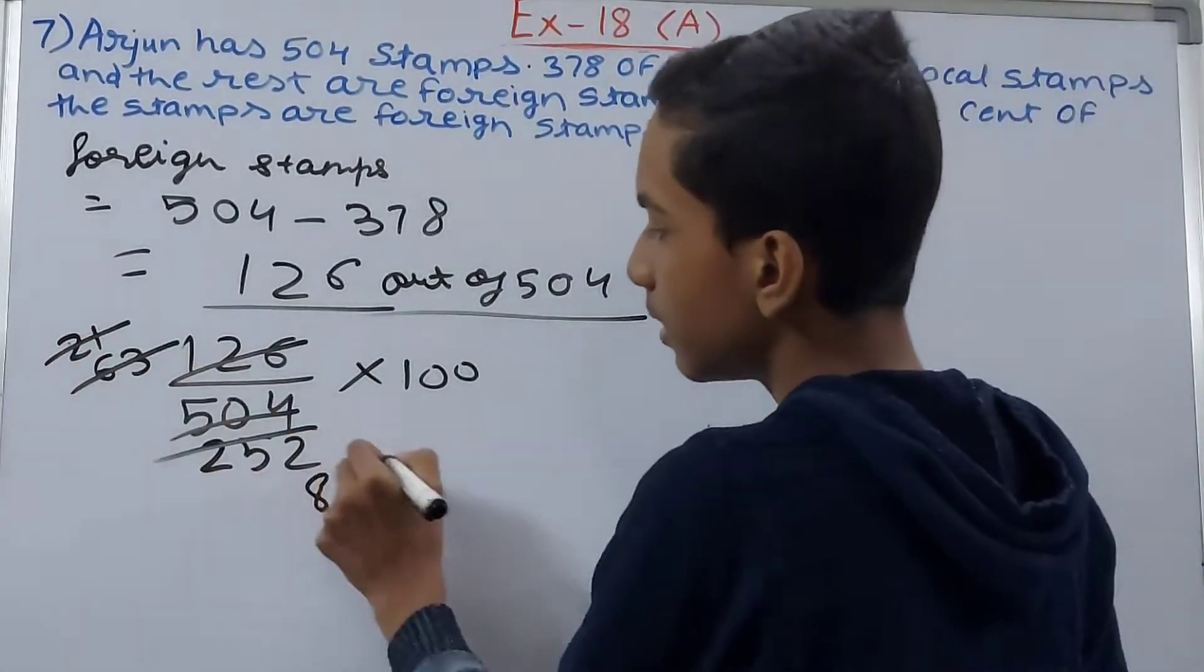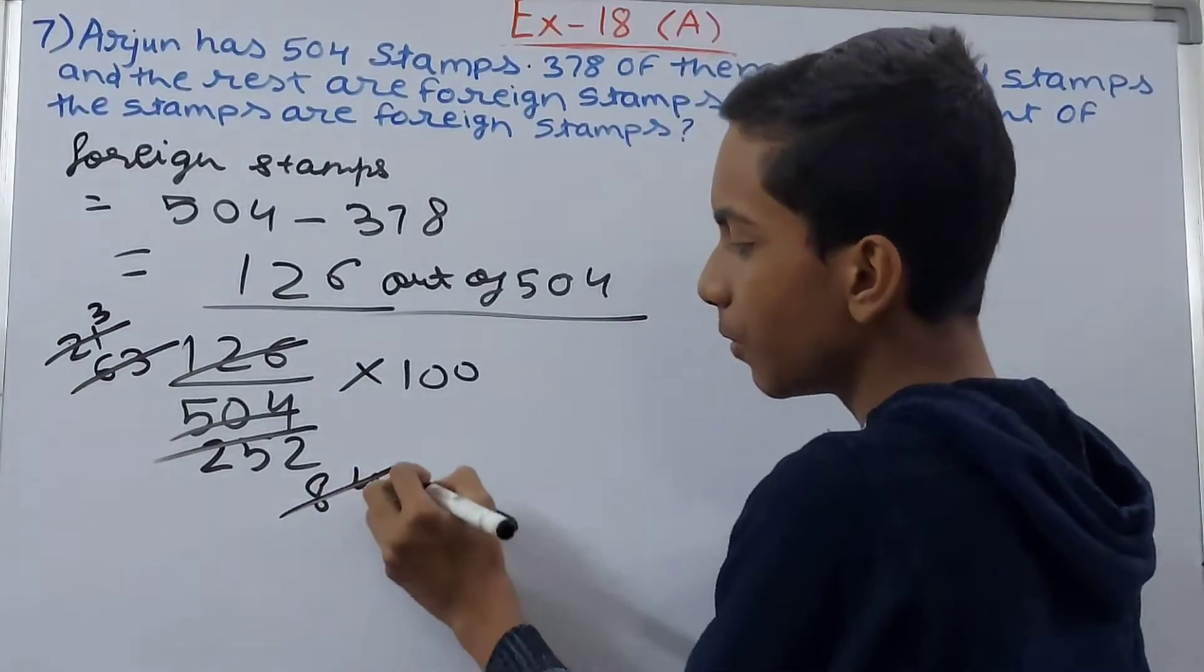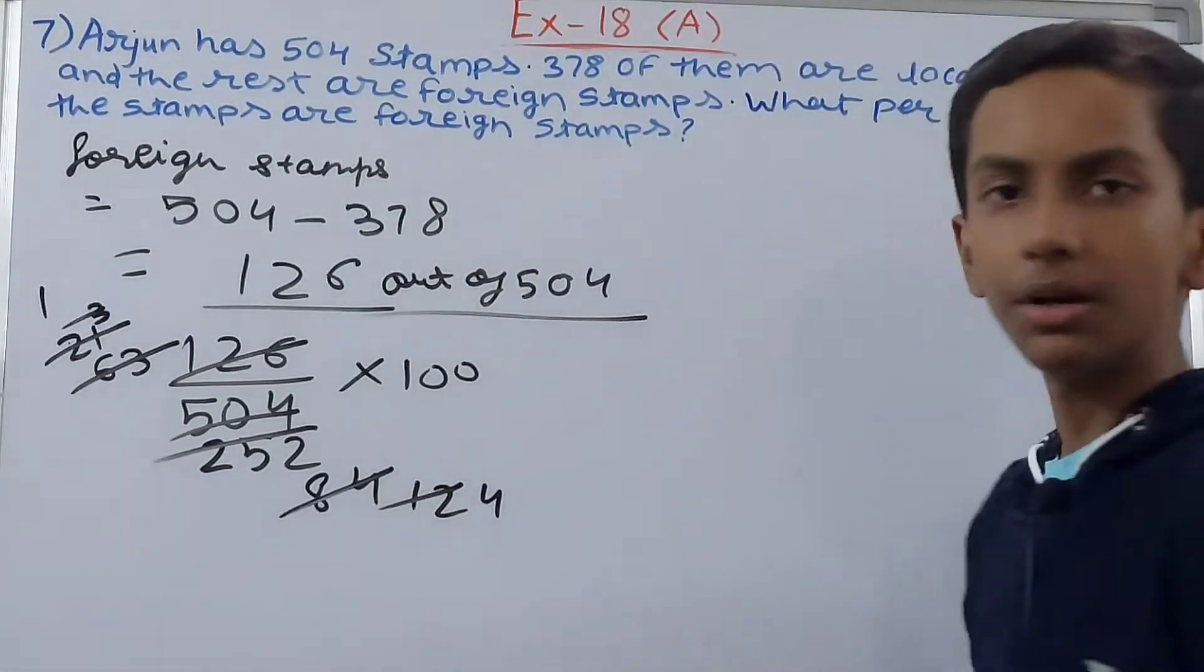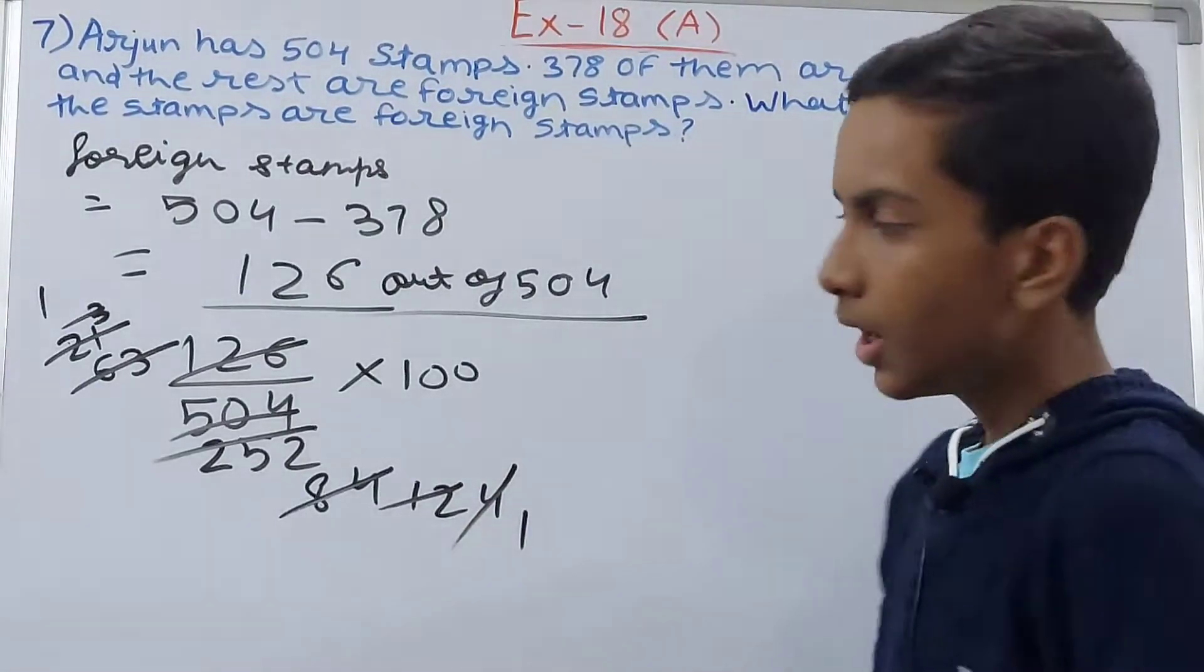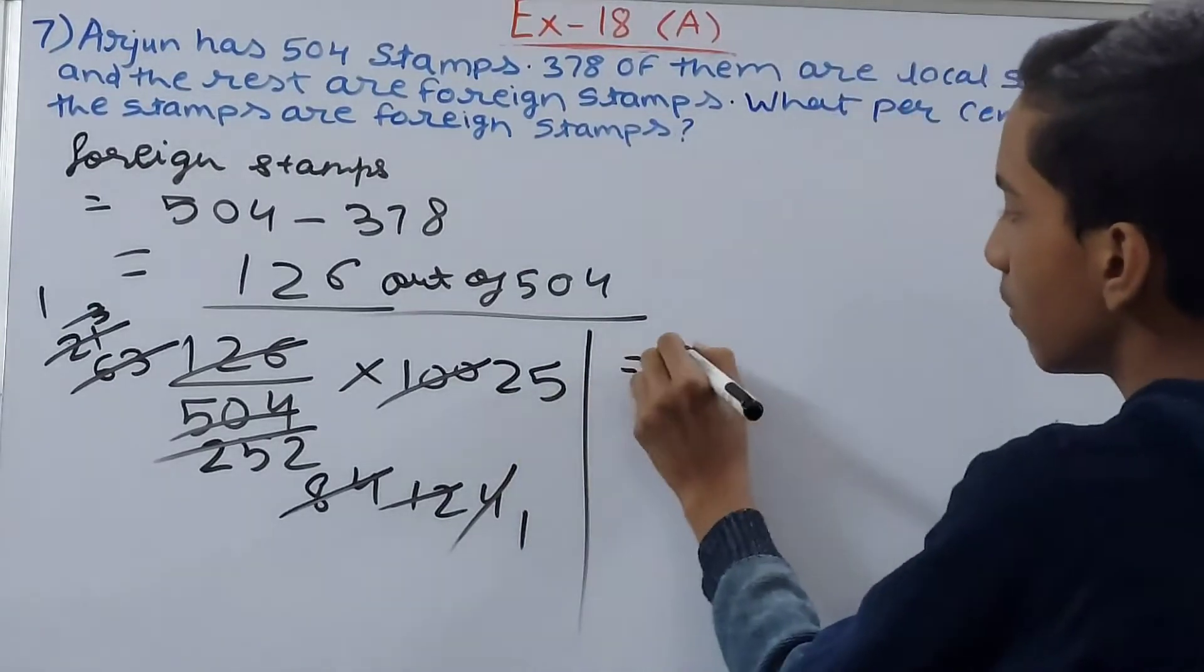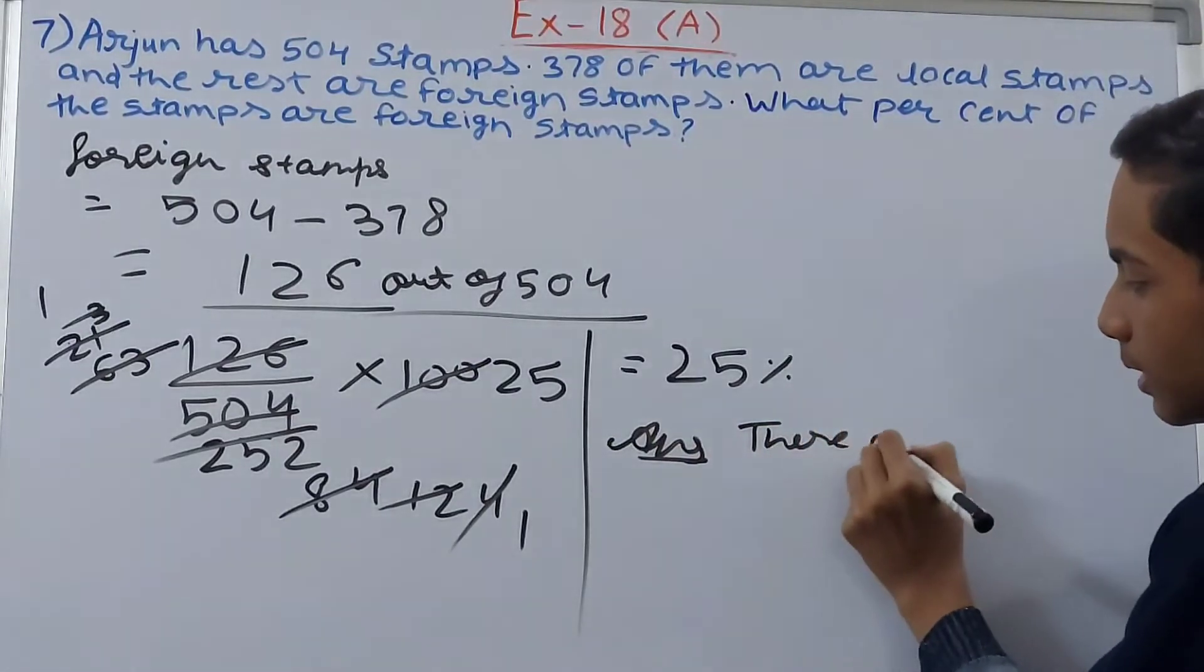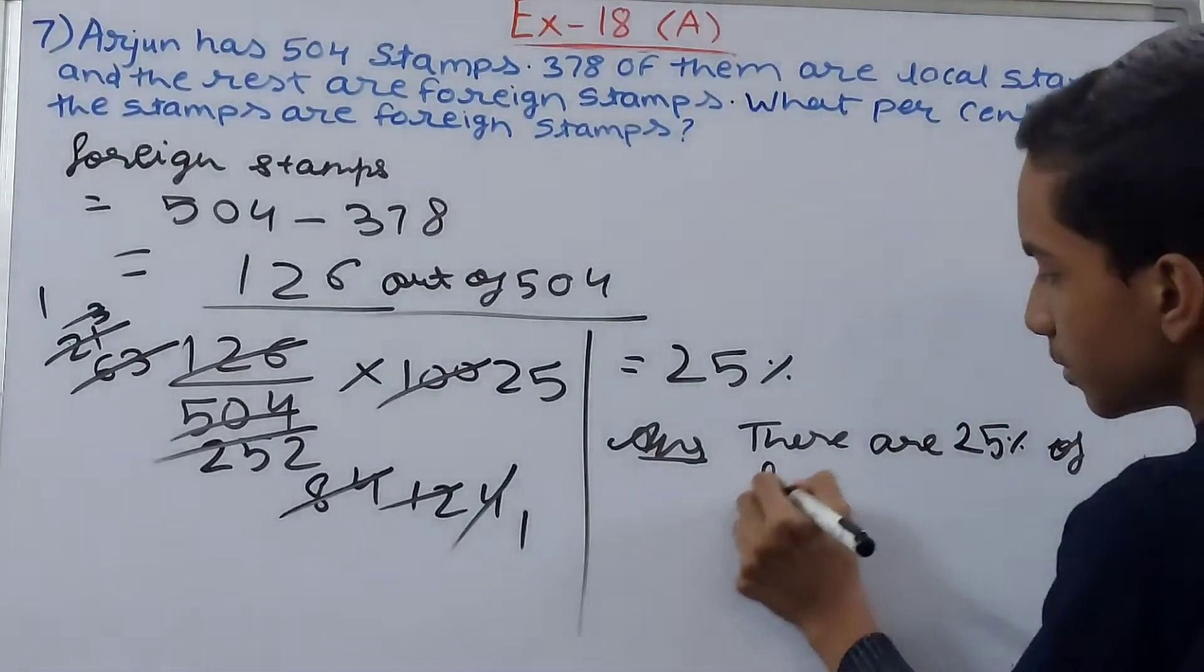Now 4 and 100, cut by 4: 4 goes 1 time, 100 goes 25 times. So we get 25 percent. The answer is: there are 25 percent foreign stamps.